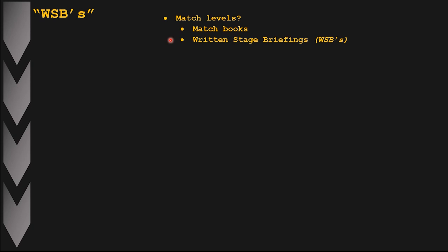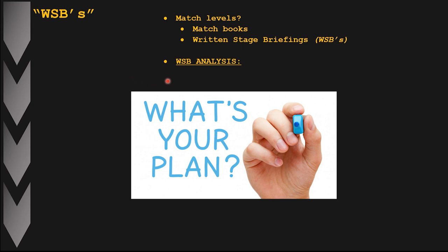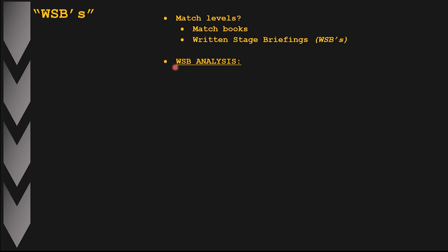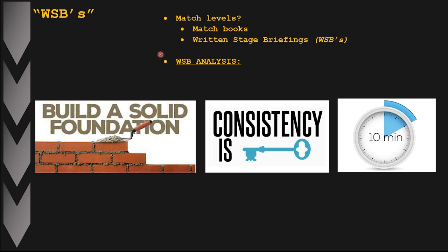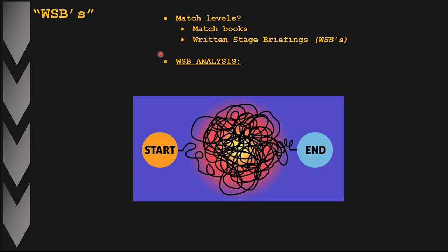Level three and higher matches are actually required by the rules to provide all that information to the competitive shooter. Now, what is my specific 10-step process to analyze written stage briefings prior to shooting a match? When stage briefings are made available, I use a keep-it-simple 10-step process for level one, two, or higher matches, which assists me in determining strategy and, later on range during walkthroughs, helps me develop my stage plan for each specific stage.